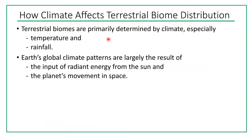Terrestrial biomes are primarily determined by climate, especially temperature and rainfall. Earth's global climate patterns are largely the result of how much light energy is received — the input of radiant energy from the sun — and the movement and rotation of our planet.